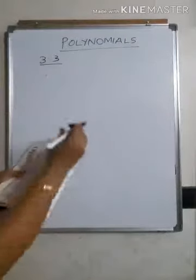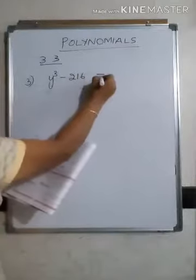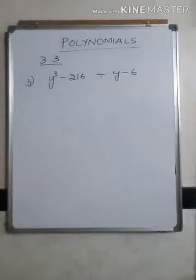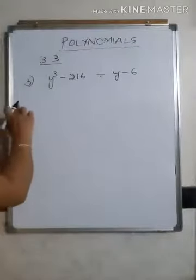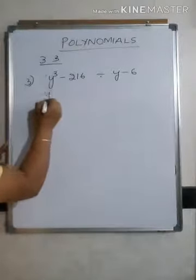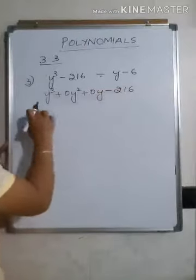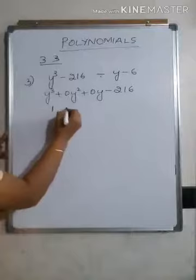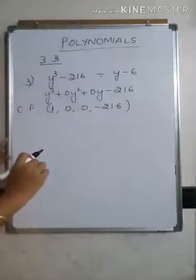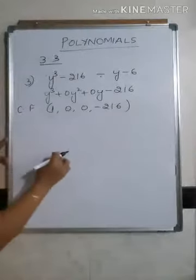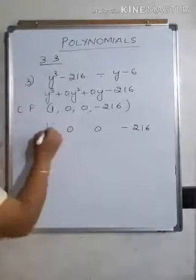Now let's take the third problem from exercise 3.3: y cubed minus 216, divided by y minus 6. The dividend must always be written in coefficient form. First write it in index form: y³ plus 0y² plus 0y minus 216. So the coefficient form is: 1, 0, 0, minus 216.